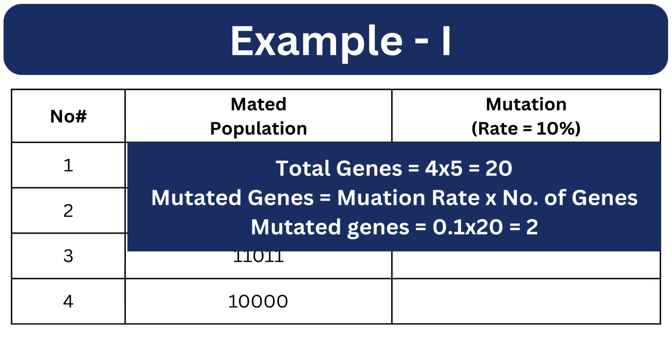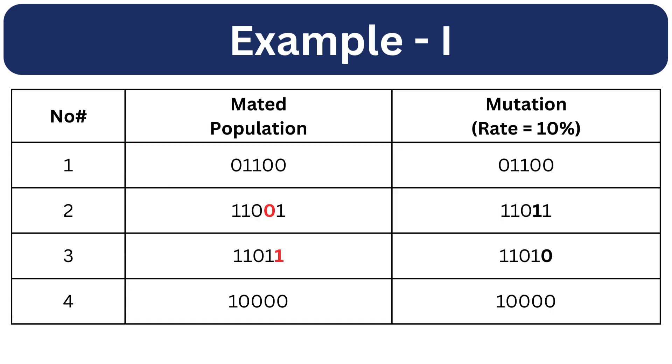To calculate the mutated genes, we need to multiply the mutation rate with the number of genes. The mutation rate is 10% which is 0.1 and total genes are 20. So the total mutated genes are 2. So in this whole population, 2 genes will be mutated.